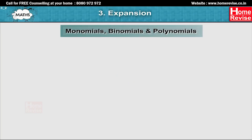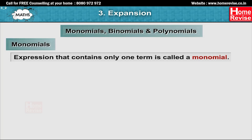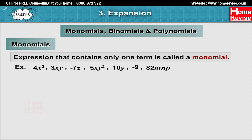Monomials, binomials and polynomials. Monomials: An expression that contains only one term is called a monomial. For example, 4x squared, 3xy minus 7z, 5xy squared, 10y minus 9, 82mnp, etc.